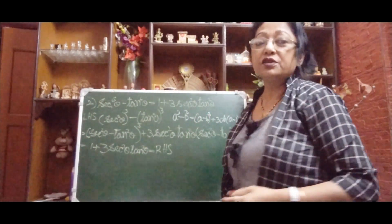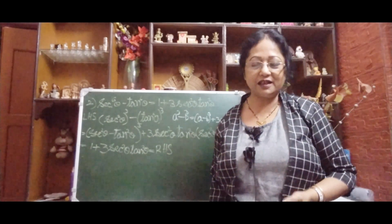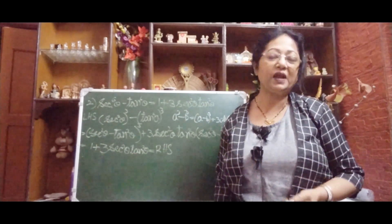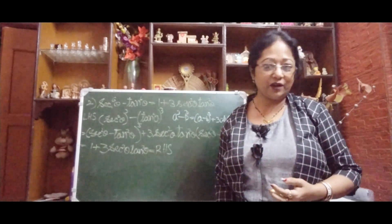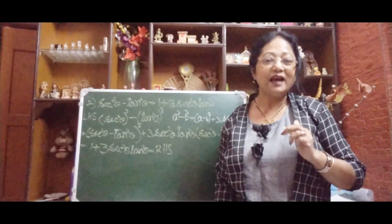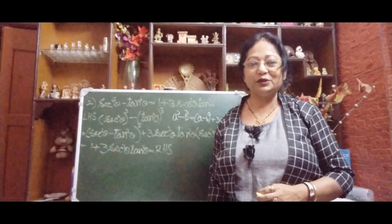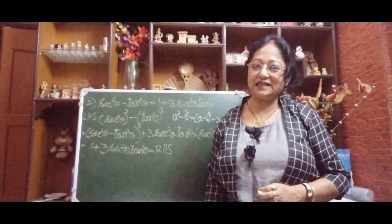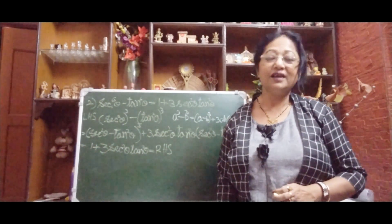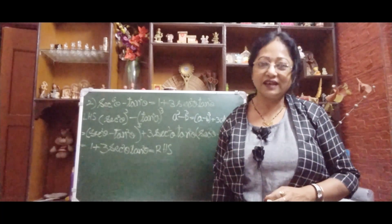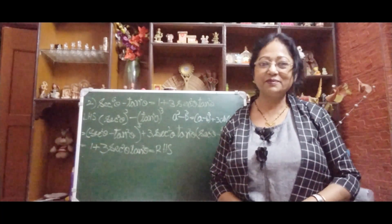This one is also proved so easily, but you have to learn the identities — a³ + b³ and a³ − b³ formulas. I hope all of you press the like button. Those who are new, please subscribe my channel and press the bell icon so you get my notifications. See you guys — bye bye.